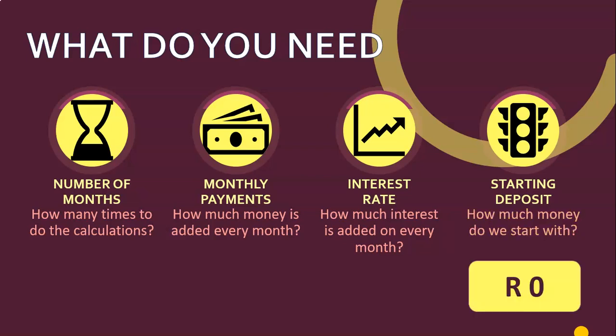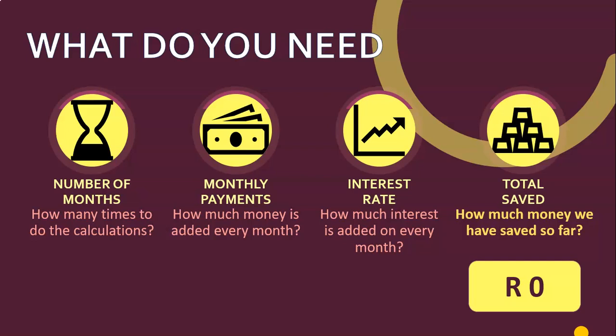I'm going to store the amount of money that is in the bank account in its own separate variable. I'm going to have a total saved variable which is going to be how much money is in the bank account, so that I can keep it separate from how much I started with. Later on when you get to conditional loops, that becomes quite a nice tool. But for now, we're just going to have a separate variable that stores how much is currently in the bank account after every month.